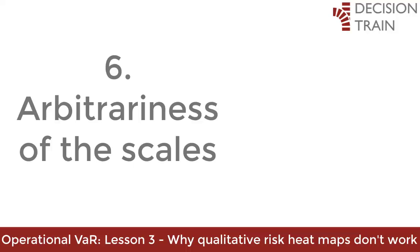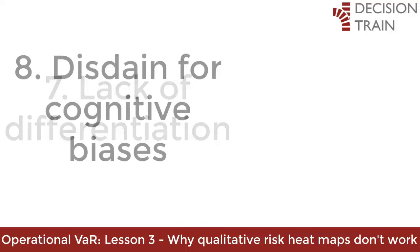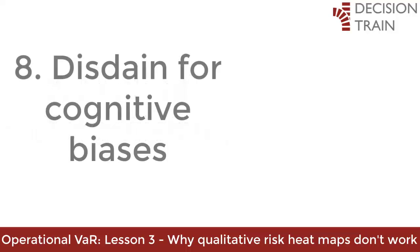In contrast, quantitative risk management does not use scales. Once multiple risks fall into the same category — for example, high probability and medium impact — there is no further way to differentiate between the severity of the risks and no way to determine which risk should be treated first. Once again, a case of deliberate ignorance. The rationality of human beings has its limitations, and this has been demonstrated ad nauseam by cognitive theory. Qualitative risk management opts for such limits.